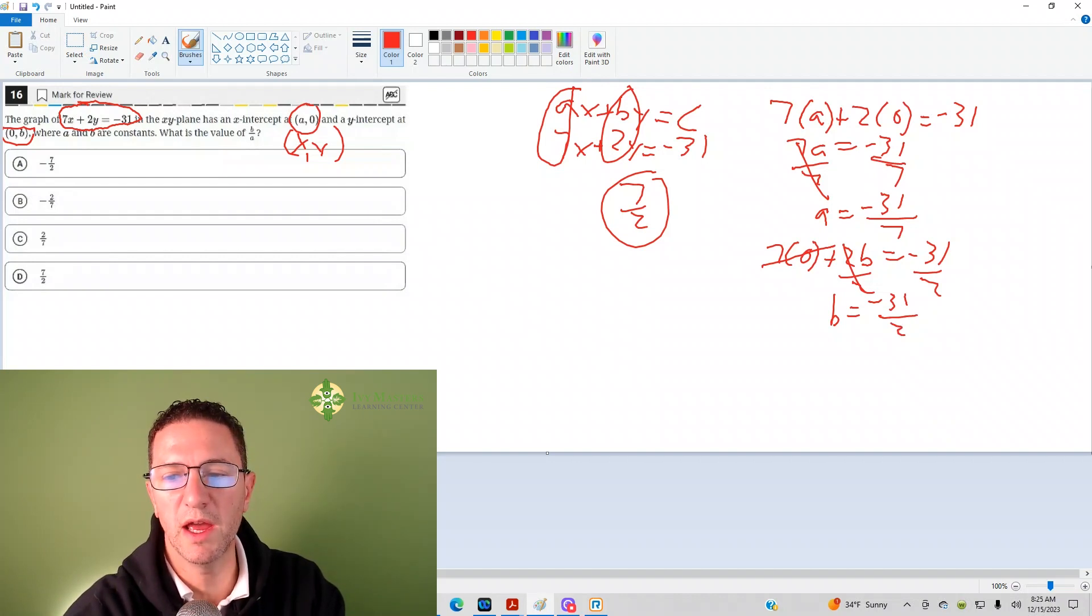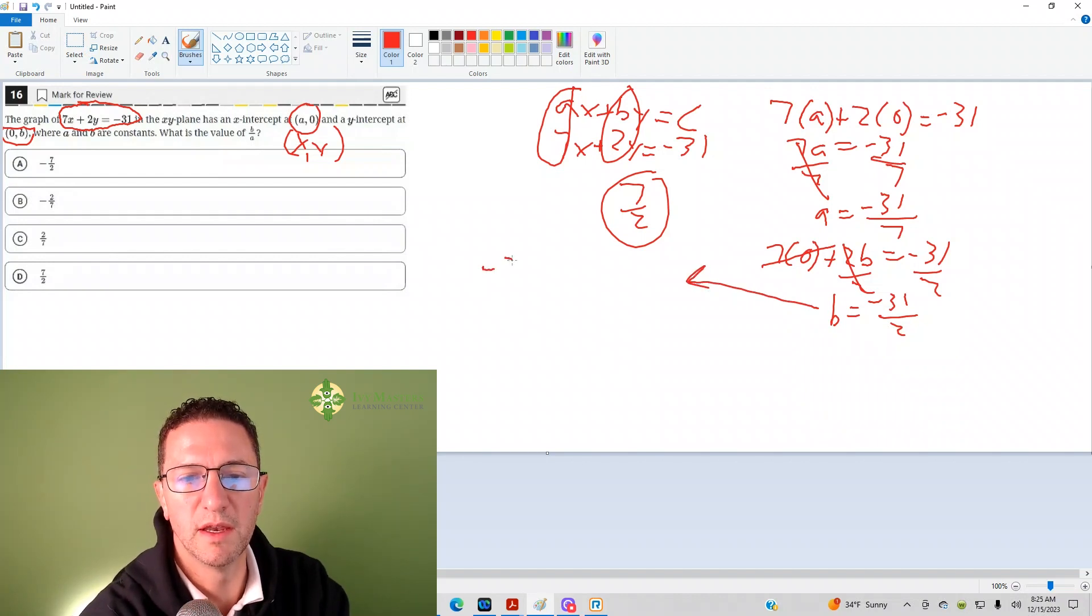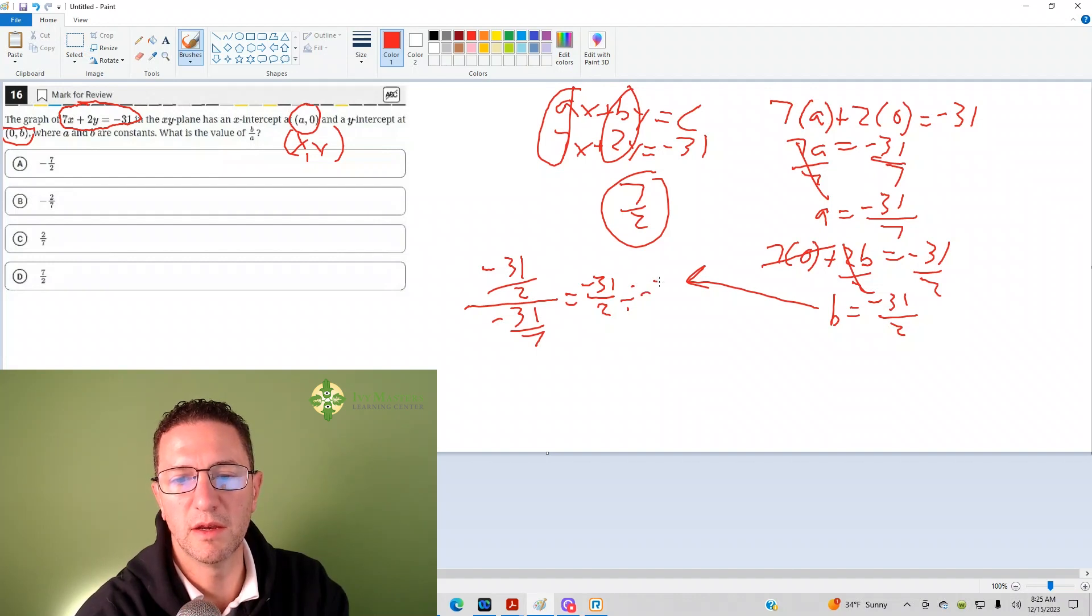Now, since asking for b over a, your b is negative 31 over 2. And your a is negative 31 over 7. So you might know that every fraction is just a division problem. It's the same as negative 31 over 2 divided by negative 31 over 7. And when you're dividing fractions, you're multiplying by the second reciprocal.